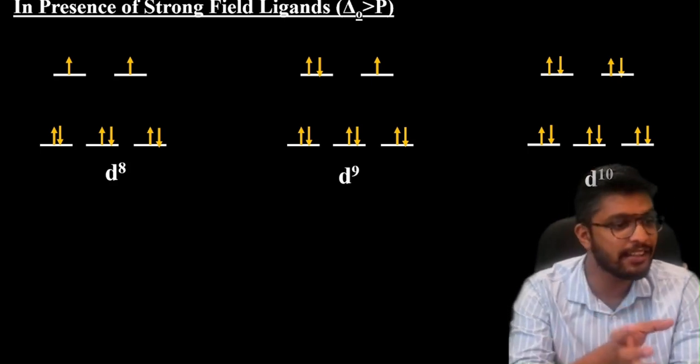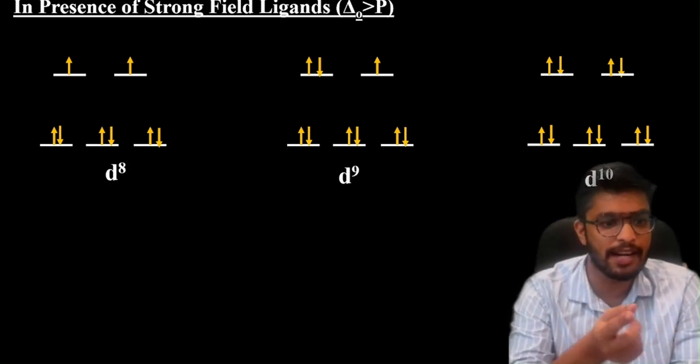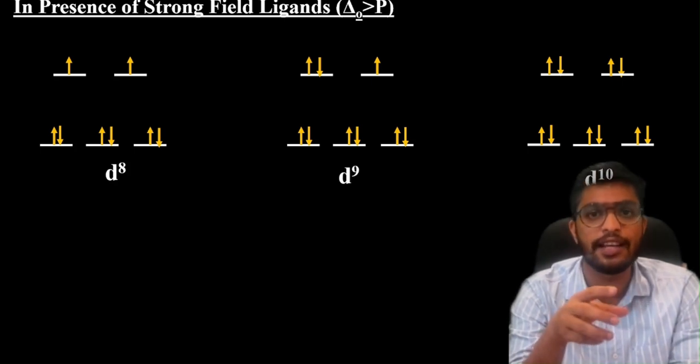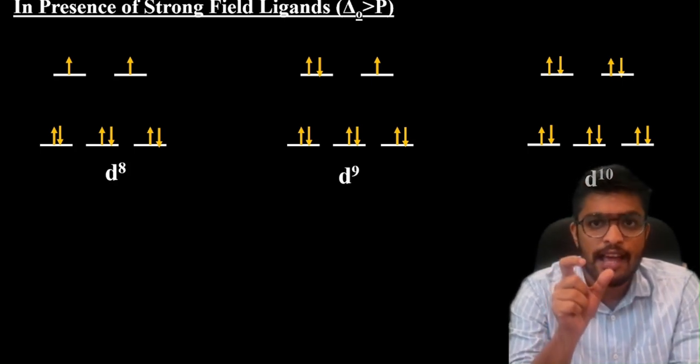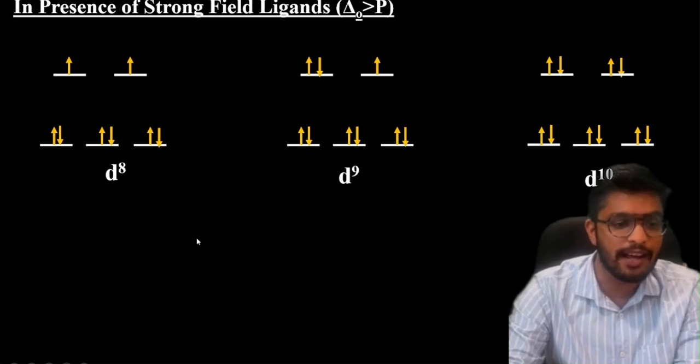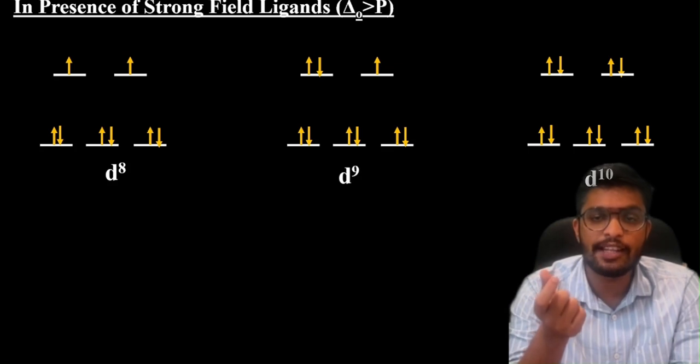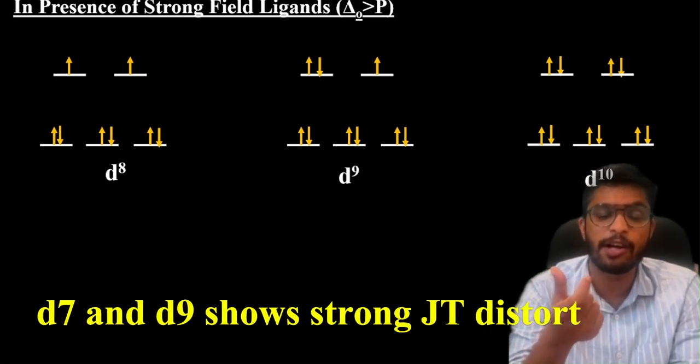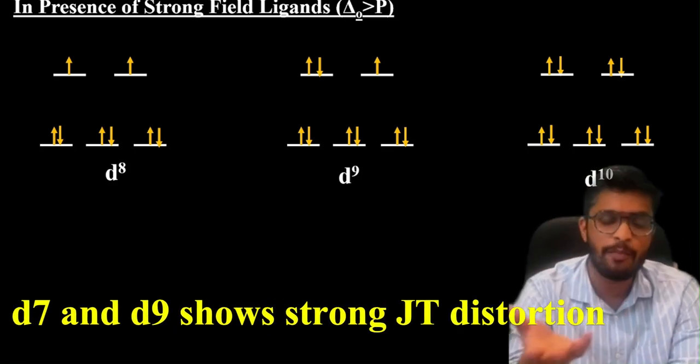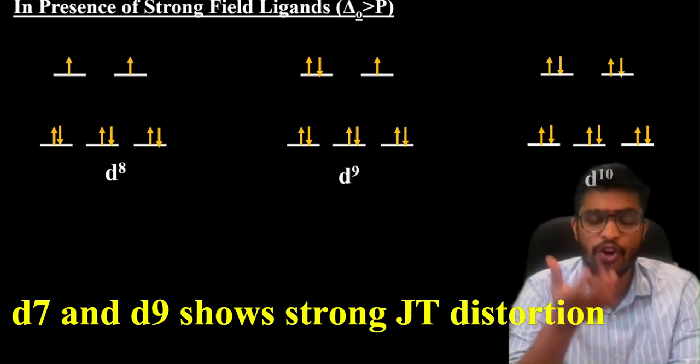D8 again has symmetrical arrangement. D9 again has EG asymmetric arrangement. D7 and d9 in presence of strong field show strong Jahn-Teller effect.